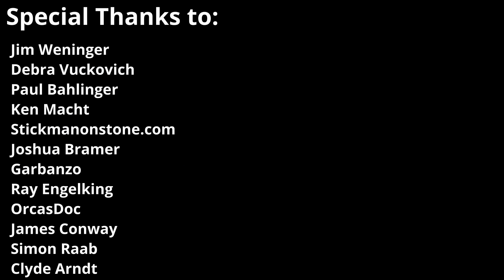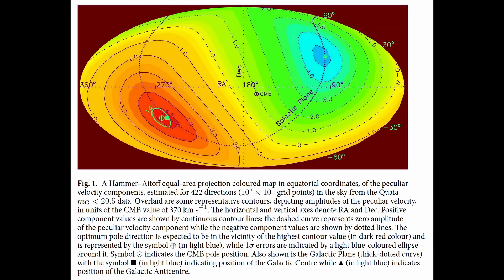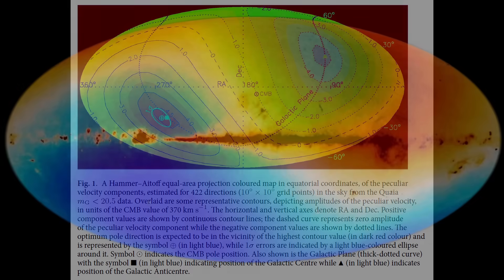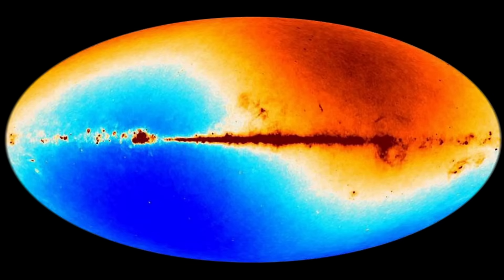To see why the new quasar results are so troubling, we need to step back and look at the cosmic microwave background itself, and why its dipole is considered so important. The CMB is a faint glow of microwave radiation filling the entire sky, about 2.7K above absolute zero.